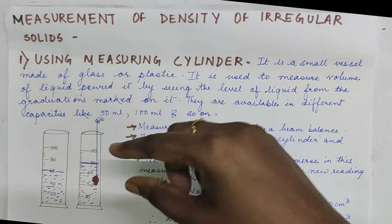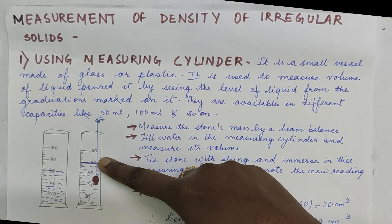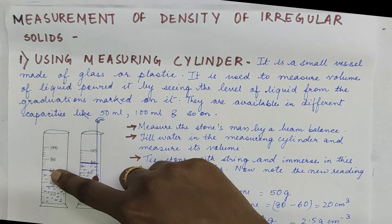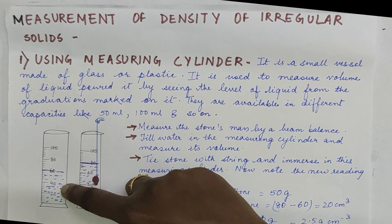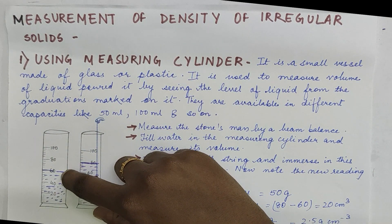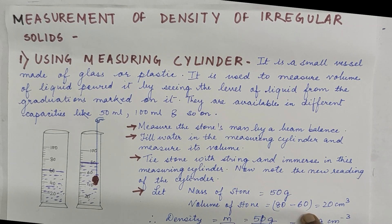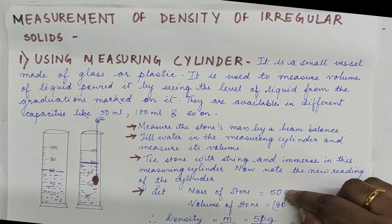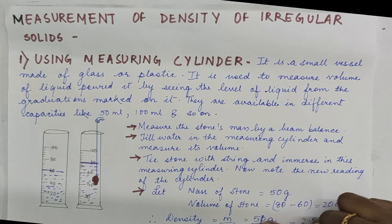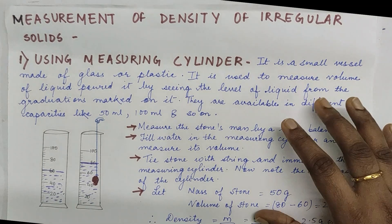Tie the stone with a string and immerse it in the measuring cylinder. The water level will rise. Note the initial volume — here it is 60 cm³ — and after immersing the stone it becomes 80 cm³. So the volume of the stone is 80 minus 60, which equals 20 cm³. If the mass of the stone measured by the beam balance is 50 grams, then density = mass/volume = 50 g ÷ 20 cm³ = 2.5 g/cm³.